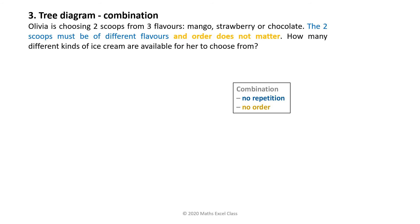Let's look at an example. Olivia is choosing two scoops from three flavours: mango, strawberry, or chocolate. The two scoops must be of different flavours and order does not matter. How many different kinds of ice cream are available for her to choose from?